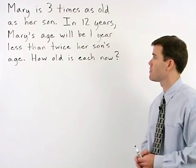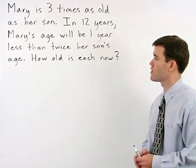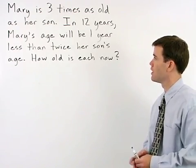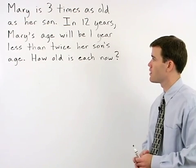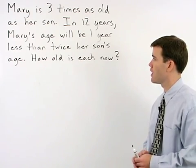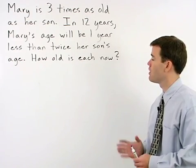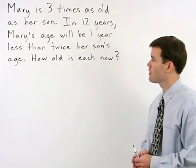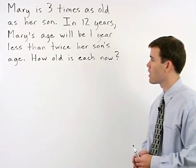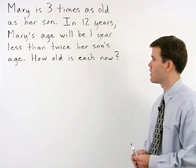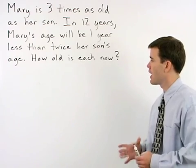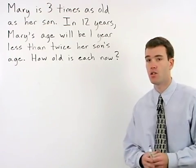Mary is three times as old as her son. In twelve years, Mary's age will be one year less than twice her son's age. How old is each now?